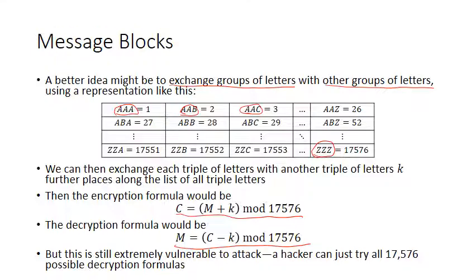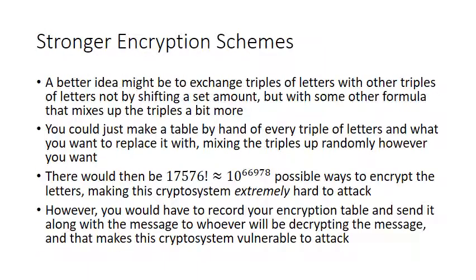Real crypto systems do block letters like this, except they typically use much larger blocks than just three letters. A better idea than just exchanging triples with other triples is to use some other formula that mixes up the triples more. Instead of just shifting down the list by a set amount, you want them to go to random places — you could make a table of every triple and what you want to replace it with, mixing up the entries as randomly as possible.